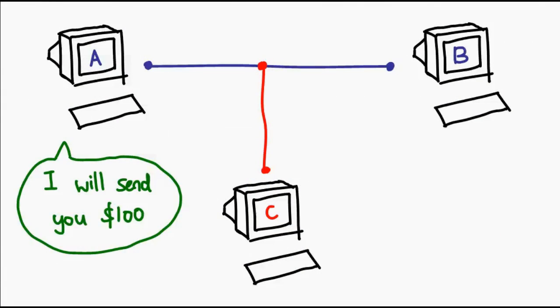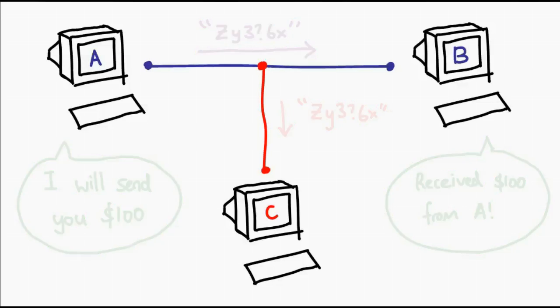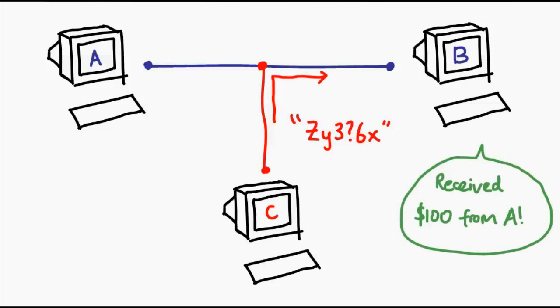However, there are still some problems that our current setup cannot address. For example, if A says to B, 'I will send you $100,' what happens if an eavesdropper in the middle actually records this message? He cannot make sense of it, but he can play it back verbatim. At any point of time, he can make A seemingly send B $100. If you were B, you'd have no idea whether this information was actually sent by A or someone else pretending to be A. At the same time, A could later deny that he was the one who sent it — you have no way of proving it was definitely sent by A. That is why this particular setup isn't perfect just yet.